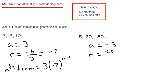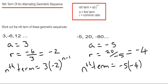20 divided by minus 5 is minus 4. Once we've done that, we can just put the two numbers into our nth term formula. So our first term is minus 5, and we multiply that by r to the power of n minus 1.